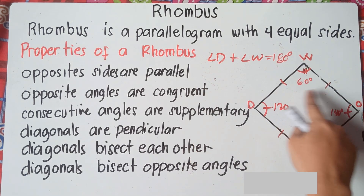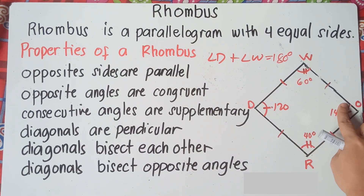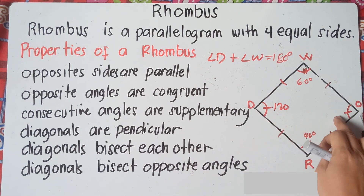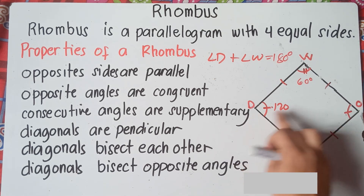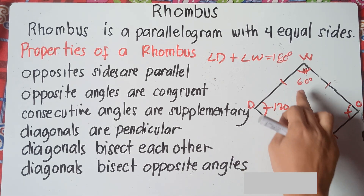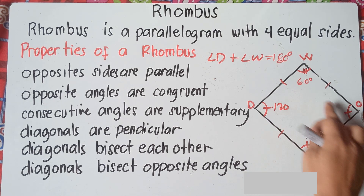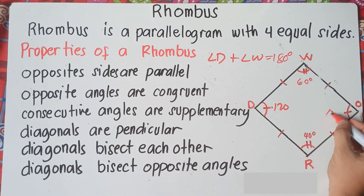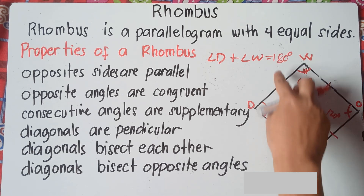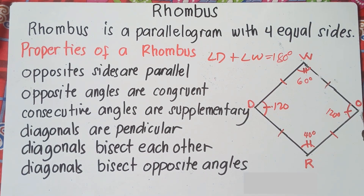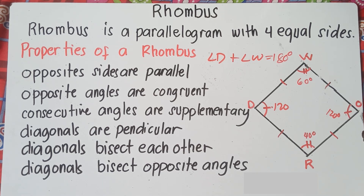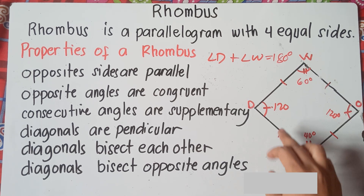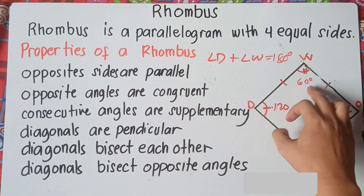If angle W is 60 degrees, what would be angle O? Using opposite angles, angle D is 120, so angle O must be 120. Using consecutive angles, 60 plus 120 equals 180 degrees. That's the third property: consecutive angles are supplementary, meaning the sum of two angles must be 180.